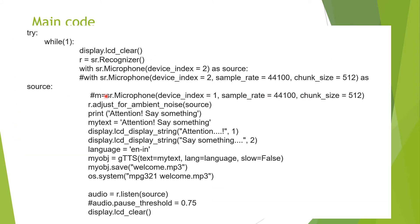Now you have the main part of the code, which consists of a while loop. You start with 'try', display LCD clear, and then we have the speech recognition system. The sample rate and device index in the microphone are set. You have the device index set with sample rate and chunk size, then r.adjust instruction, and then a print statement — 'Attention, say something' — which is the voice prompt.